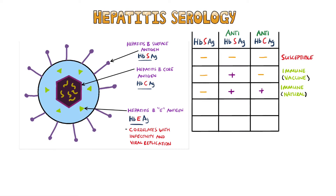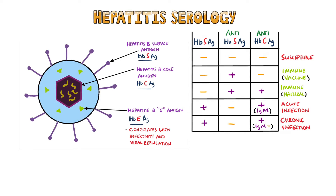Now let's look at the acute and chronically affected scenarios. Patients with a positive hepatitis B surface antigen, IgM anti-hepatitis B core, and negative anti-hepatitis B surface are acutely infected. On the other hand, patients with hepatitis B surface antigen positive, anti-HBC positive, negative IgM anti-HBC, and negative anti-hepatitis B surface antibodies are chronically infected patients.